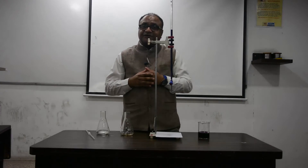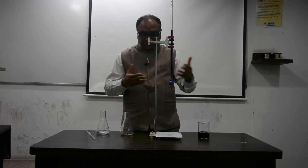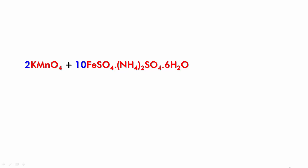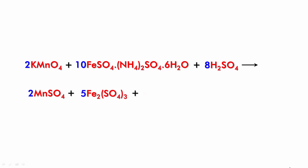I will now show you the reactions and calculations involved to find the concentration of ferrous ammonium sulfate. Here is the balanced reaction: 2 KMnO4 reacts with 10 FeSO4·(NH4)2SO4·6H2O and H2SO4, giving MnSO4, Fe2(SO4)3, K2SO4, 10 (NH4)2SO4, and 48 H2O. This is the complete balanced reaction.